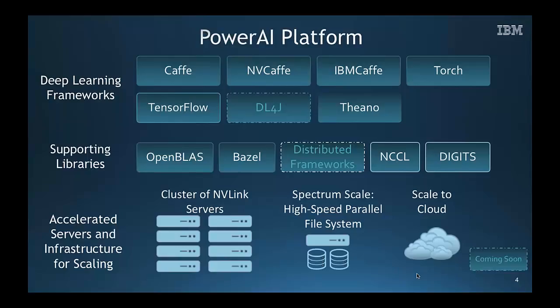We support all of these on our cluster of NVLink-enabled servers, the SA22LC for HPC, and we help propagate and get data to these systems through IBM's high performance and high speed parallel file system, Spectrum Scale.